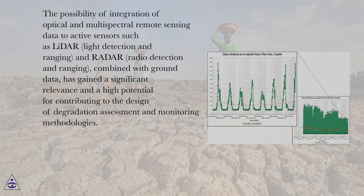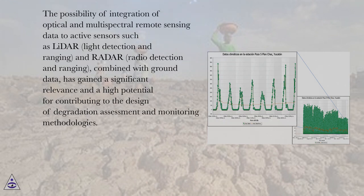The possibility of integration of optical and multispectral remote sensing data with active sensors such as LiDAR (light detection and ranging) and radar (radio detection and ranging), combined with ground data, has gained significant relevance and high potential for contributing to the design of degradation assessment and monitoring methodologies.